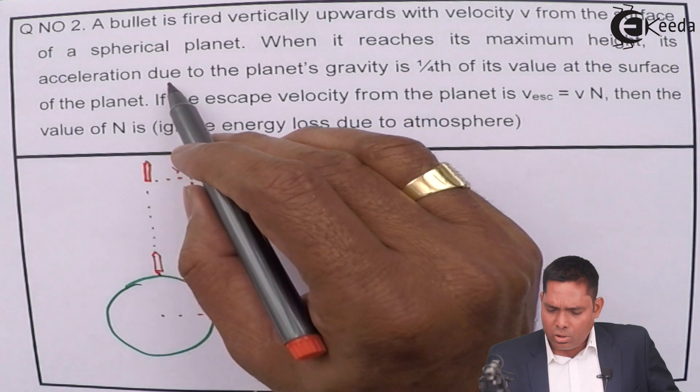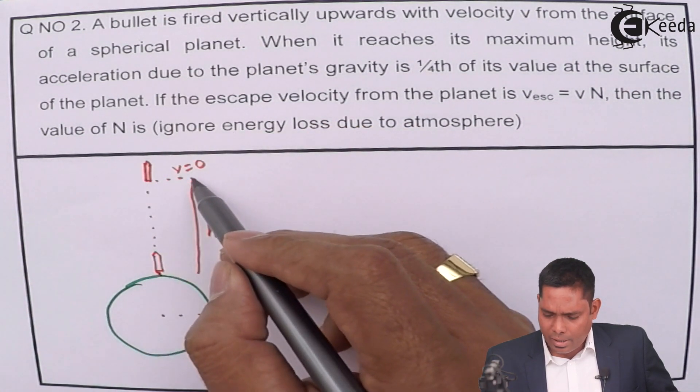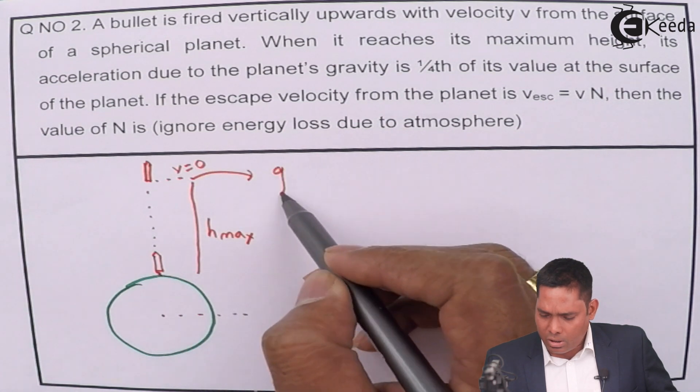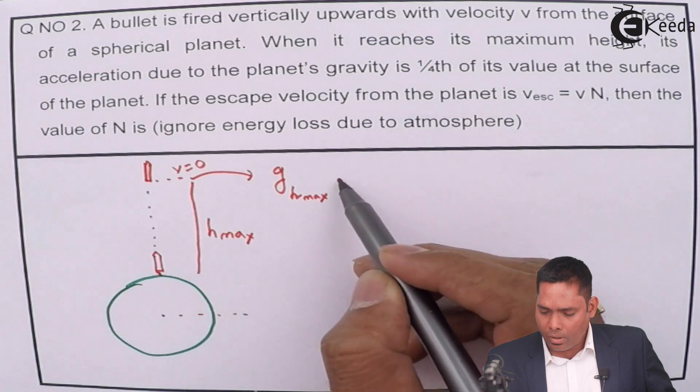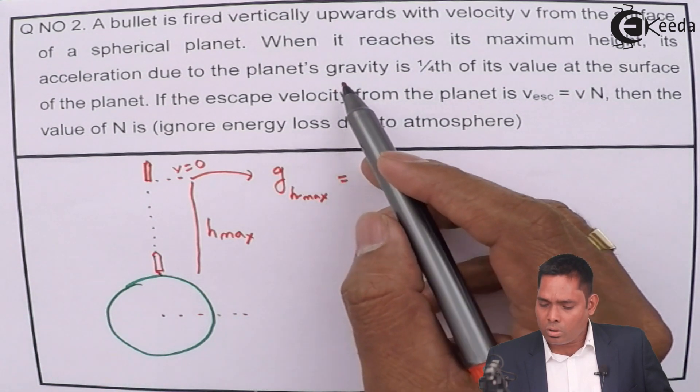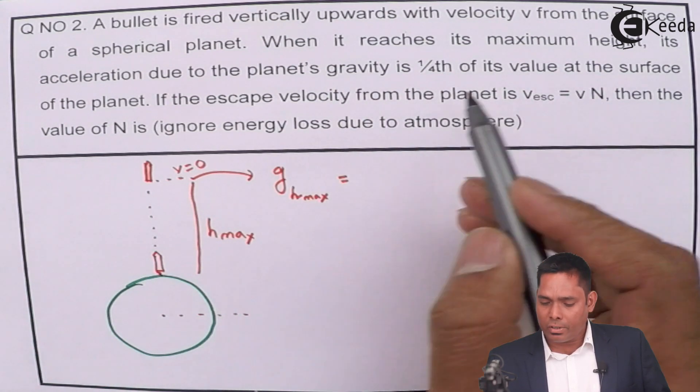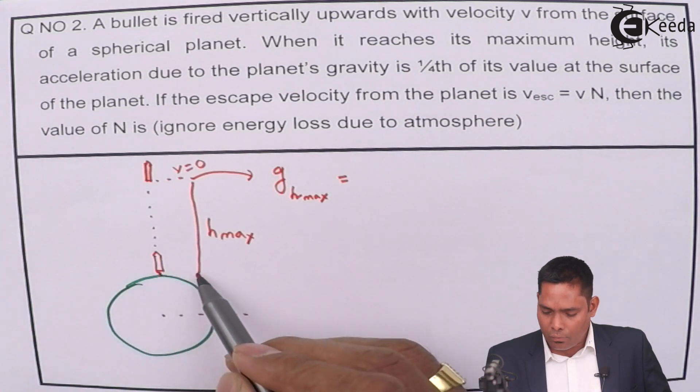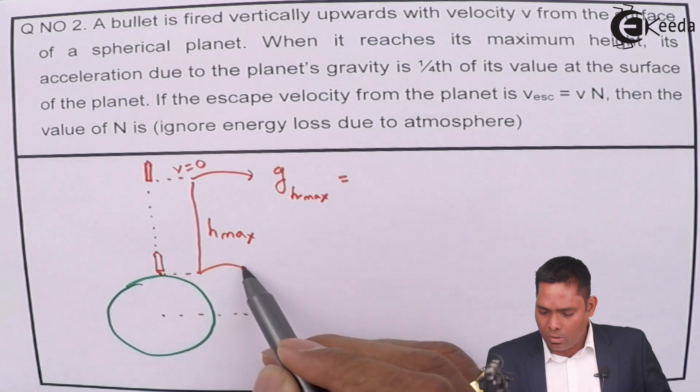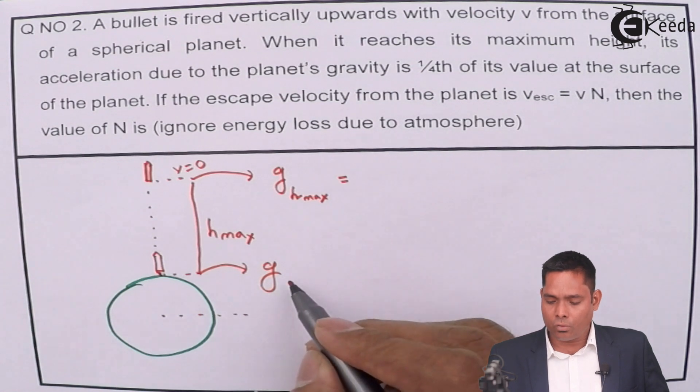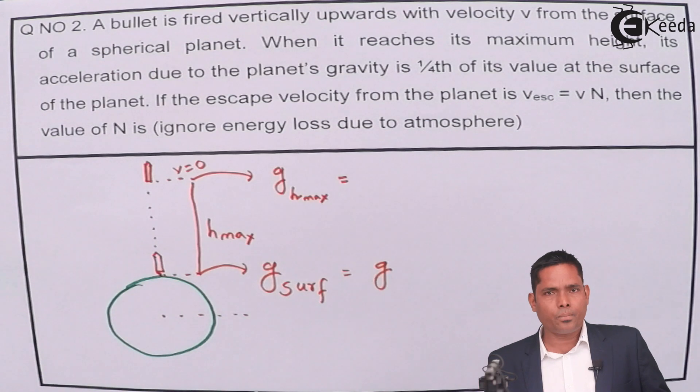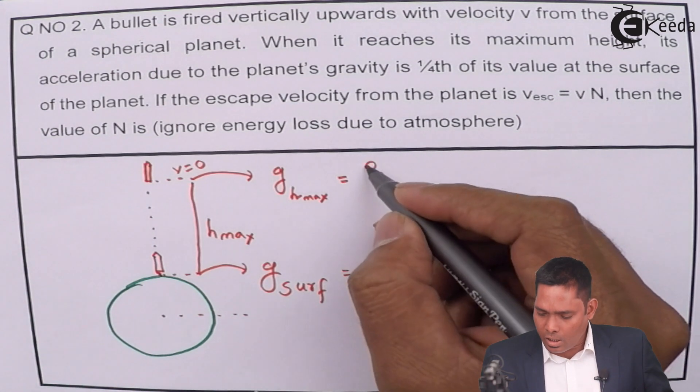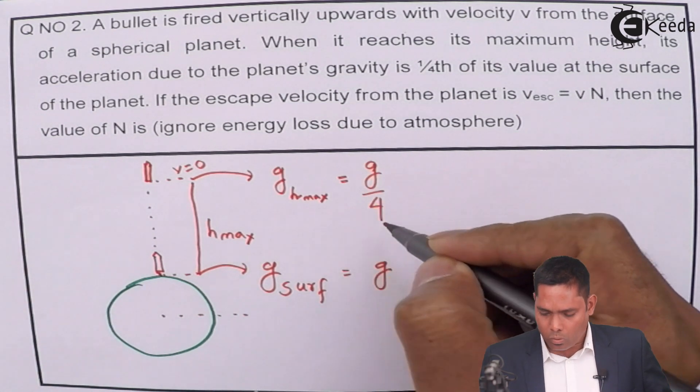Its acceleration due to gravity at this point, at height h_max, is one fourth of its value at the surface of the planet. At the surface the value of g is g, then at height h_max it is g divided by 4.